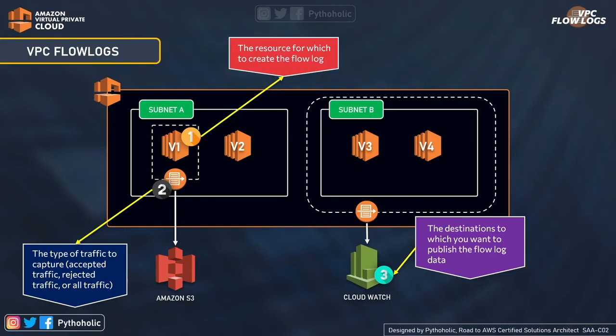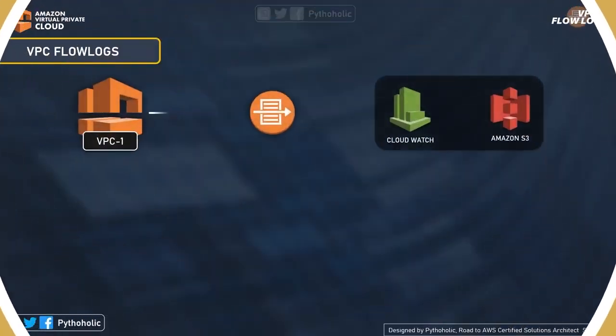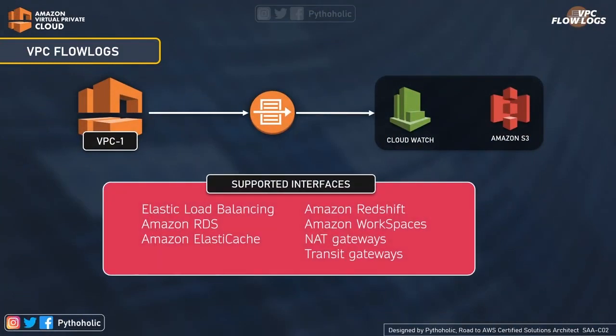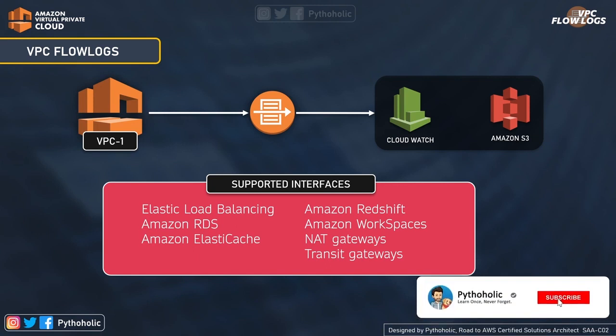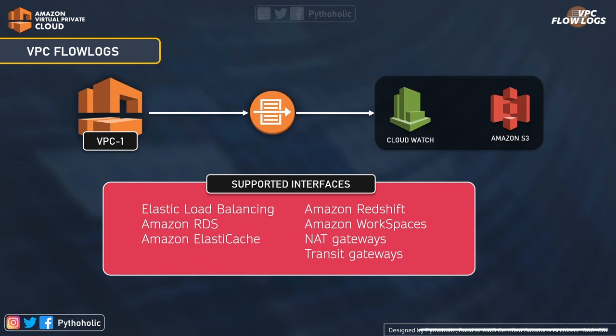Unfortunately, since nothing is attached to instance V2, it misses out on the logs. You can also create flow logs for interfaces created with Elastic Load Balancing, Amazon RDS, Amazon ElastiCache, Amazon Redshift, Amazon WorkSpaces, NAT Gateways, and Transit Gateways — providing many provisions to enable VPC flow logs and monitor these systems. You can send logs to CloudWatch or Amazon S3, which is an added advantage.